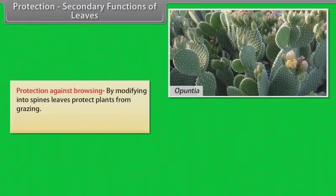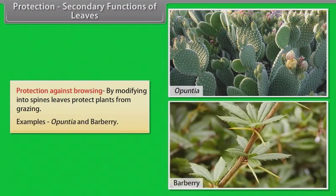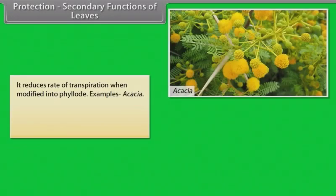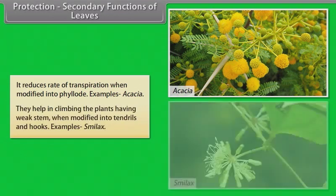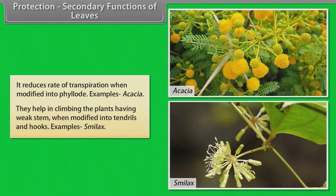Protection against browsing by modifying into spines. Leaves protect plants from grazing. Examples: Opuntia, Acacia, and Barberry. It reduces rate of transpiration when modified into phyllodes. Examples: Acacia. They help in climbing the plants having weak stem when modified into tendrils and hooks. Examples: Smilax.